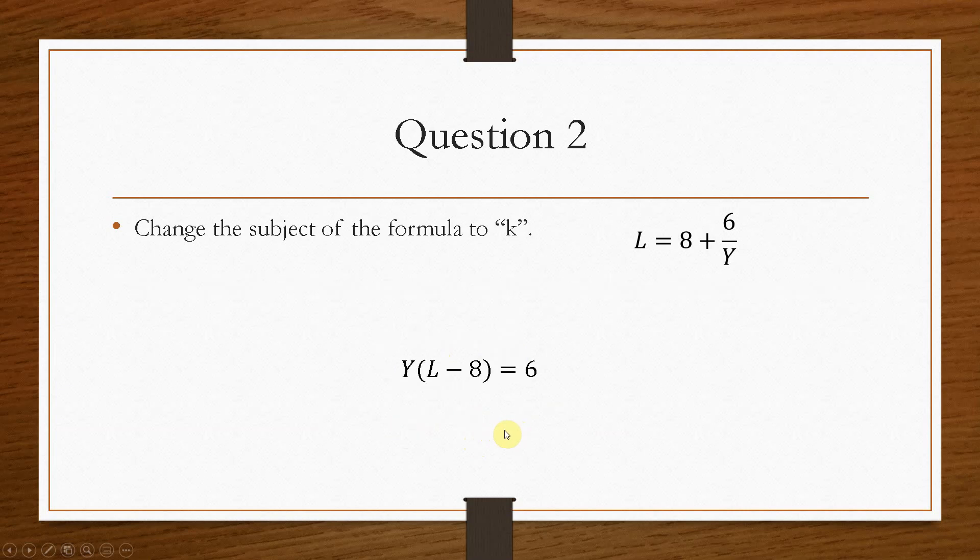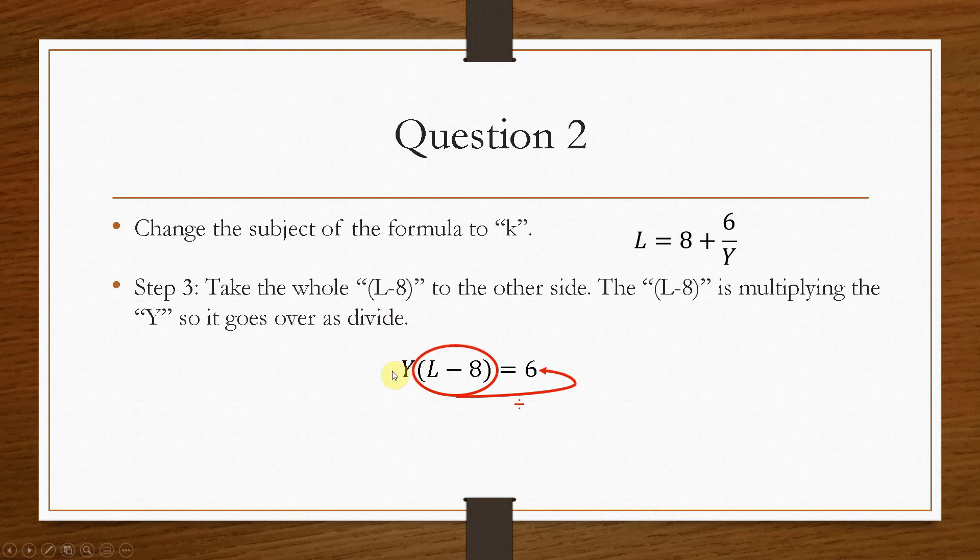So we have one final thing that we have to do. We've now got to get rid of the l minus 8. Now you could, in essence, take the l across first and then take the 8 across, but it's much easier just to take the entire l minus 8. So l minus 8, in this case, is multiplying the y. So we have to divide it, the whole thing, by l minus 8. The final answer becomes 6 divided by l minus 8.